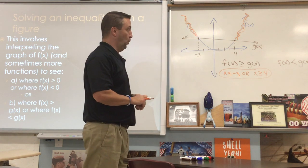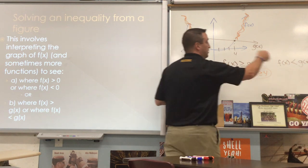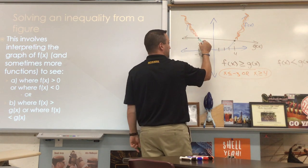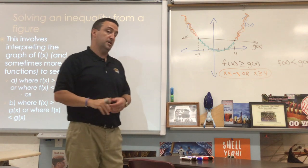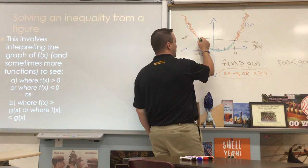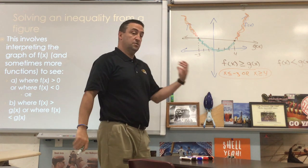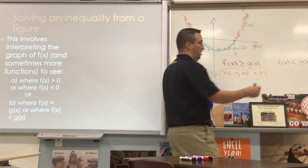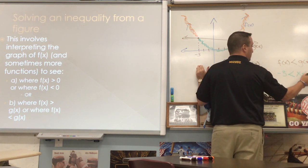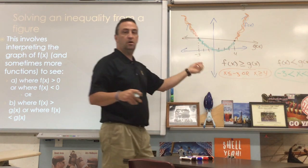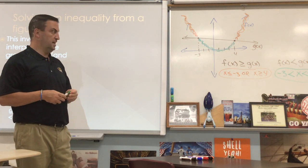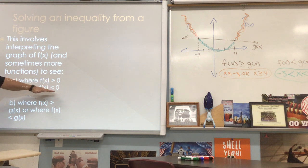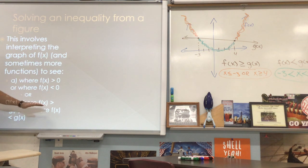Where is f(x) less than g(x)? That's where the parabola is below the line — down in the dip, between the two intersection points. We express the answer in terms of x: f(x) is less than g(x) when x is between negative 3 and 4. Whether comparing to 0 or to another function, the approach is the same.